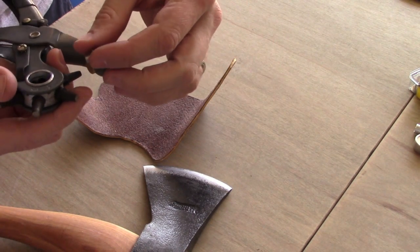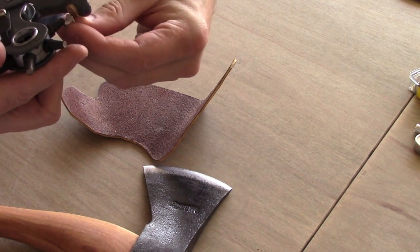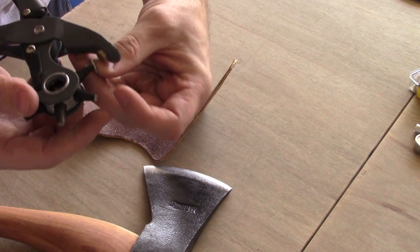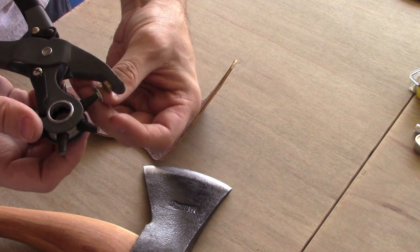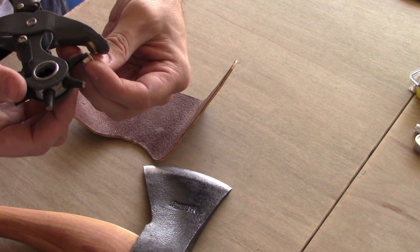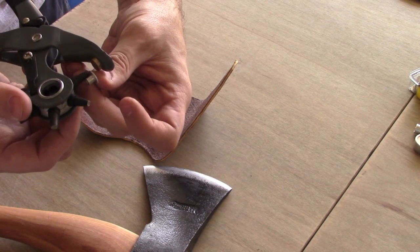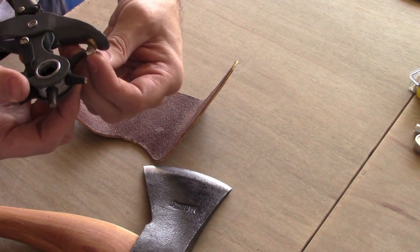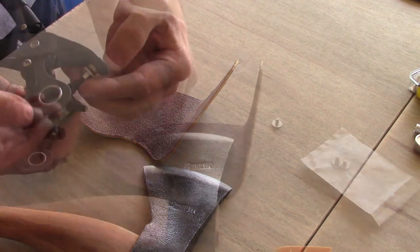Make sure our hole is appropriate for the size of the Chicago screw or rivet or whatever it is you're using. Cut small first because after you go and cut a hole that's too big, it's kind of hard to go back.